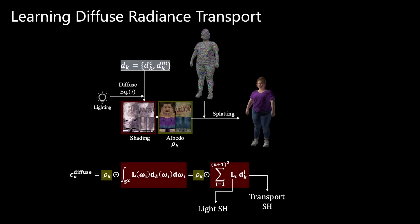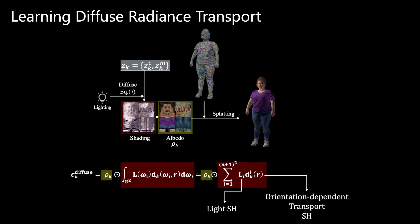One key contribution of this work is to adopt learned radiance transport functions for articulated full bodies. Previous methods on human faces learned diffuse radiance transport functions as a set of spherical harmonic coefficients. Human heads can always be put into a canonical coordinate frame, and the light sources can be converted into this canonical frame, so the learned transport spherical harmonics do not need to consider the orientation of the head. However, in the case of full-body avatars, each body part has its own canonical coordinate frame. Ideally, we would like an orientation-dependent radiance transport function, where the transport spherical harmonics vary according to the orientation of the body part in the world coordinate.